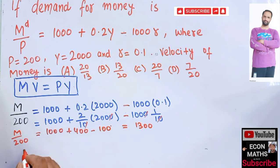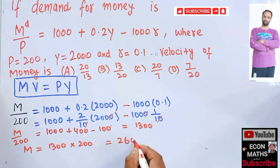That means our M/200 is equal to 1300, which gives us M will be equal to 1300. Transposing this will get multiplied, so this comes out to be 260,000. So we got the money supply is this very number.